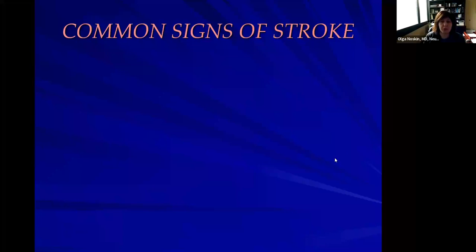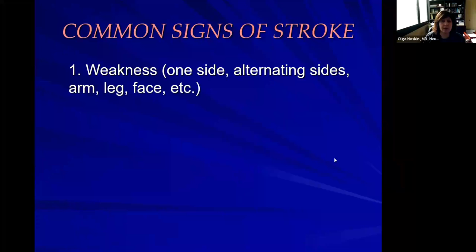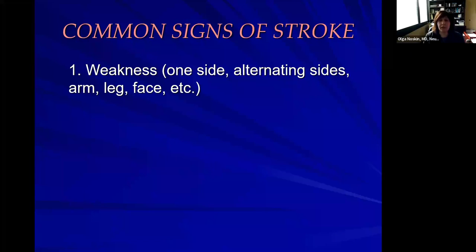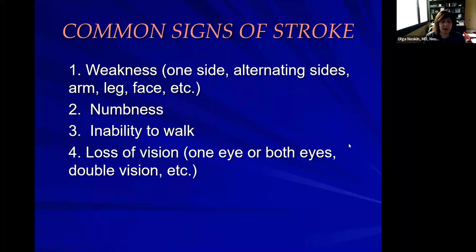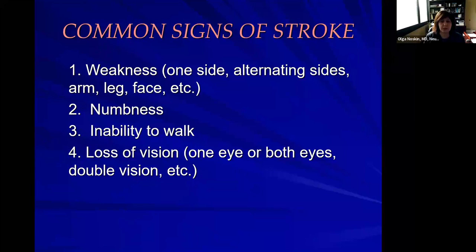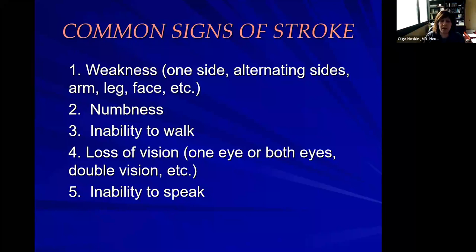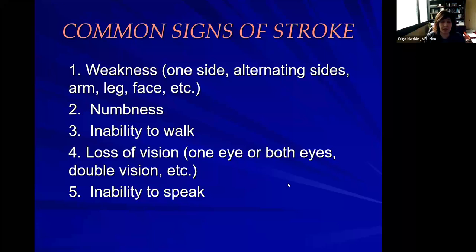What are the common signs of stroke? Weakness — it can happen on one side, sometimes alternating sides, and can affect the arm, leg, face, and other parts of the body. Numbness, inability to walk — which does not have to occur due to weakness. Loss of vision, involving one or both eyes. People can have double vision or even flipped vision. People unable to speak — they can either not produce any sounds, use different words, or there's jumbled speech. There are also unusual symptoms: personality changes, patients becoming belligerent or very docile, different from their usual personality.